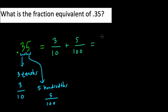Well, if I multiply 3 by 10 and 10 by 10, and we're adding this to 5 over 100, what happens there? Well, this is just 30 over 100,